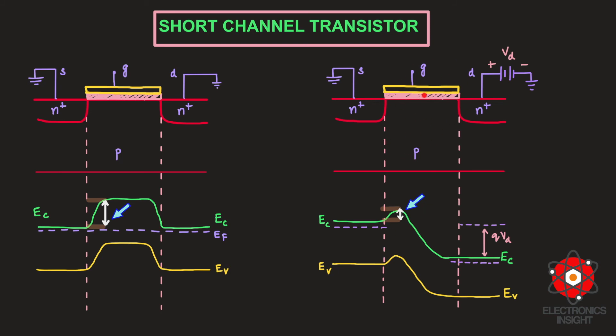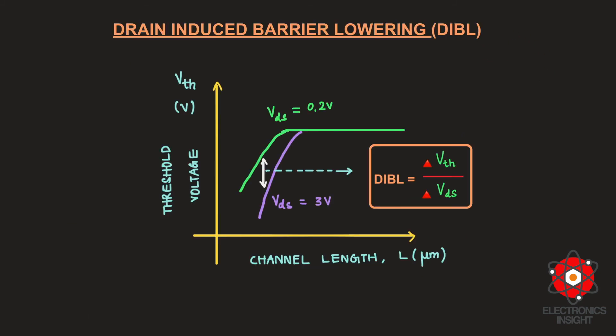Ultimately, the DIBL effect causes the threshold voltage of the device to become lower as we shrink the channel length. Previously, the threshold voltage was independent of VDS, as it was defined as the minimum gate voltage requirement dependent on VGS. Now the threshold voltage is also changing due to influence from the drain-side potential.